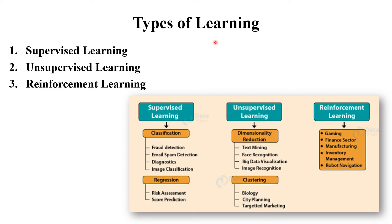The first point is types of learning. In machine learning there are basically three types of learning: supervised learning, unsupervised learning, and reinforcement learning. In this session we will learn about the first type, that is supervised learning.